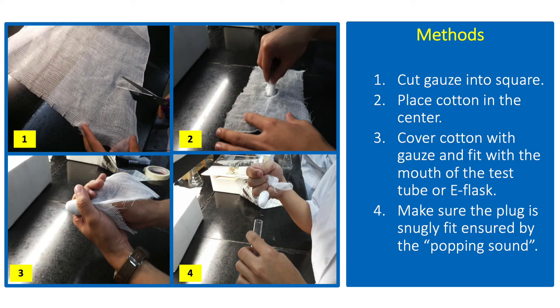To make a cotton plug, cut the gauze into squares depending on the diameter of the tube or flask, then place a lump of cotton at the center. Cover the cotton completely with the gauze and fit with the mouth of the tube or flask.